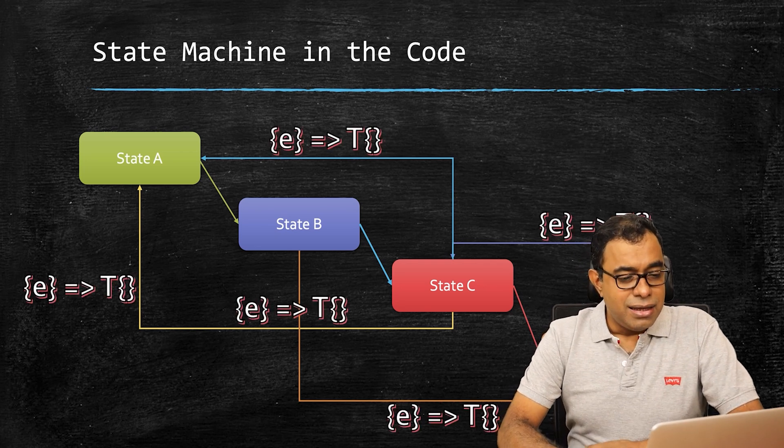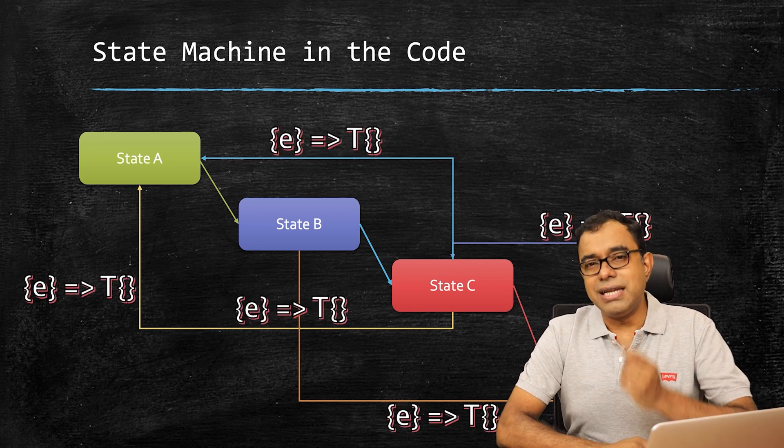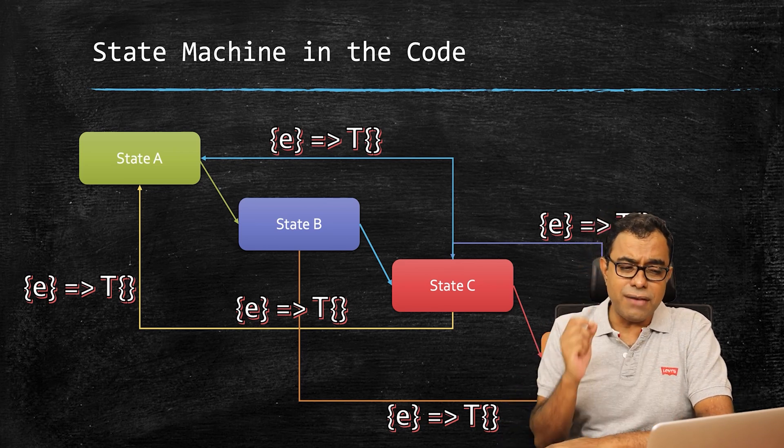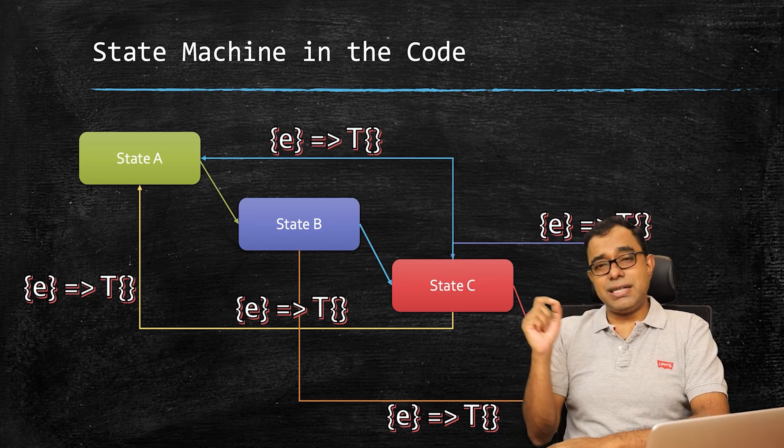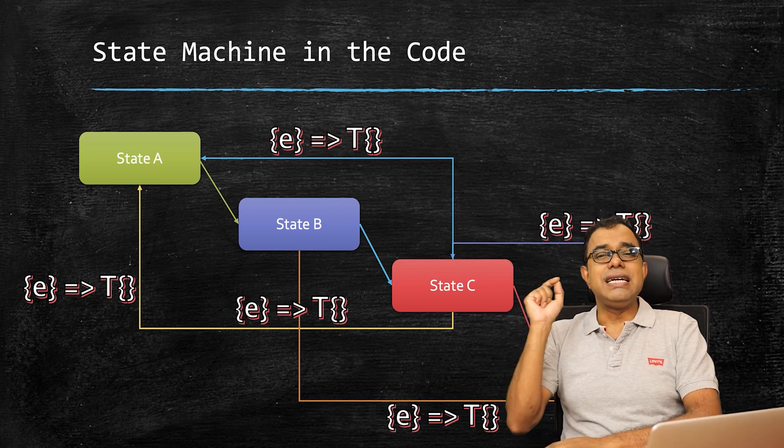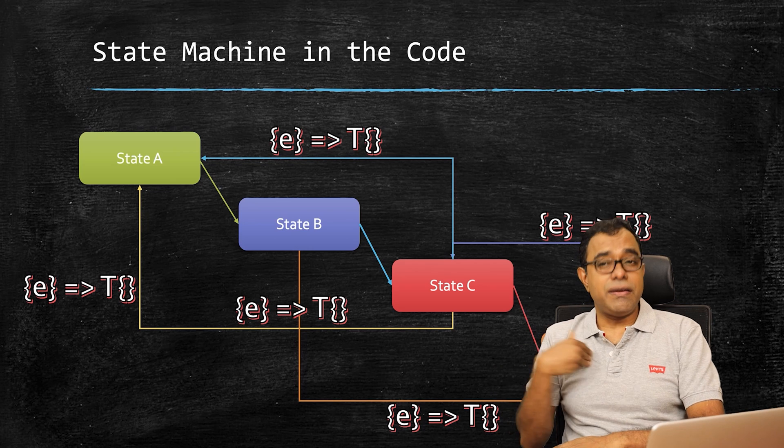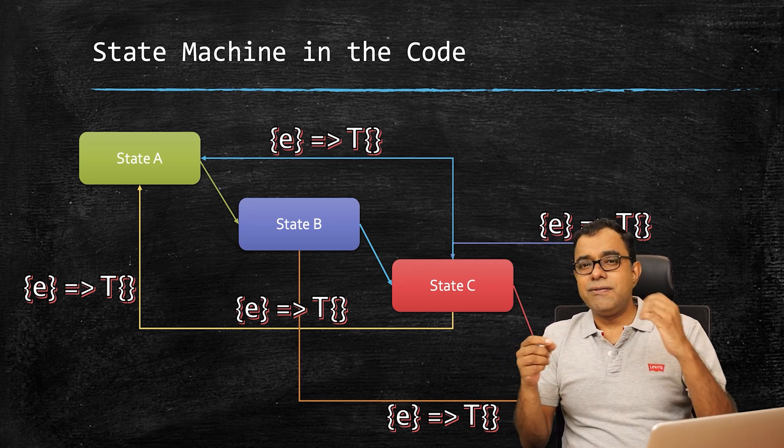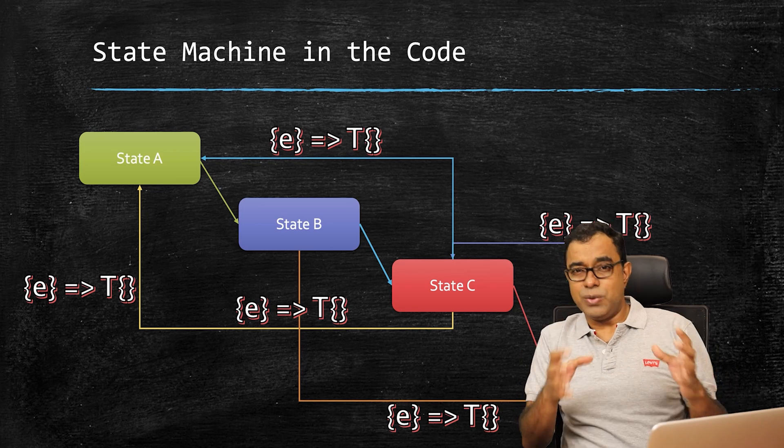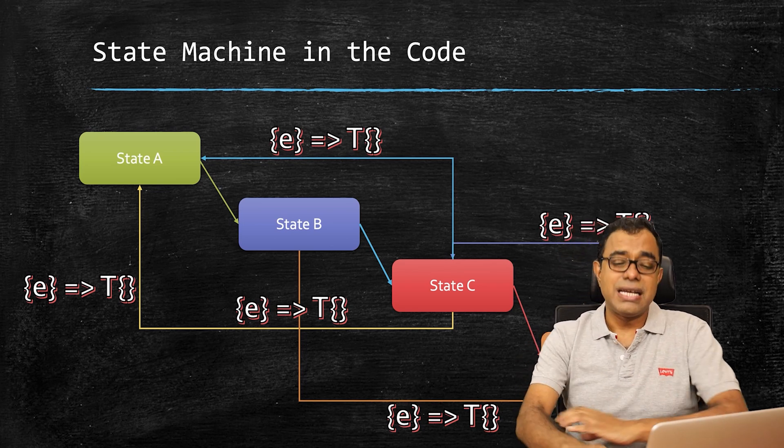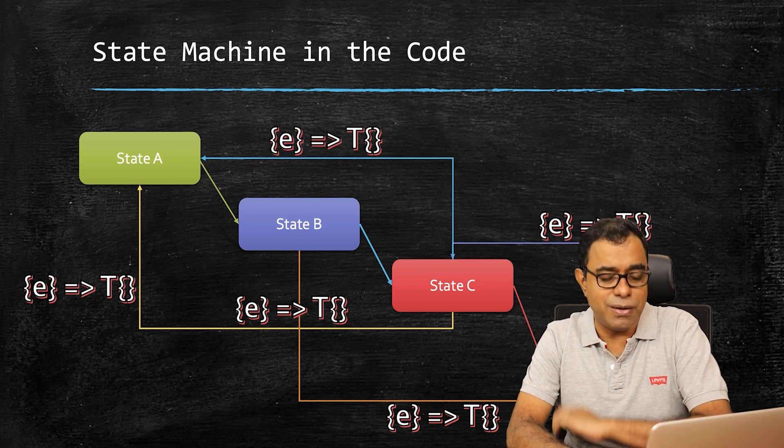Now the very important thing is events and transition functions. For every state, from one state to another state, if someone wants to go from one state to another state, there must be some event. Even we as individuals don't go from one state to another state without some events doing something. And then we also do some transition functions, as I have explained a moment back.